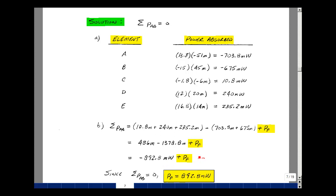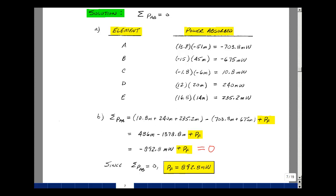Of course, all this has to equal zero. The power absorbed by element F would then be a plus 892.8 milliwatts. And this is supplemental problem 2.6.